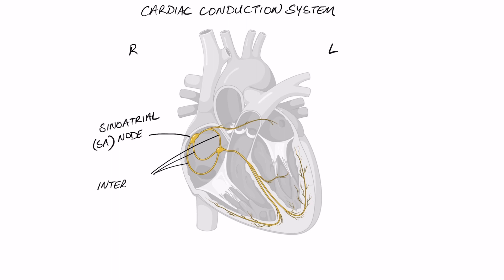From the SA node, most of these impulses need to get to the ventricles where the strongest contraction happens and largely these electrical impulses are going to travel down these internodal tracks to arrive at the atrioventricular or the AV node. Together the SA and the AV nodes are the heart's primary source of pacemaker cells.